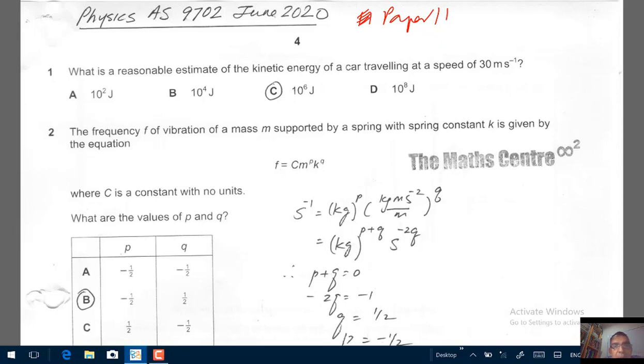What is a reasonable estimate of the kinetic energy of a car traveling at a speed of 30 meter per second? Kinetic energy, we know it is half mv squared. So let's say the average mass of a car is 2,000 kg.